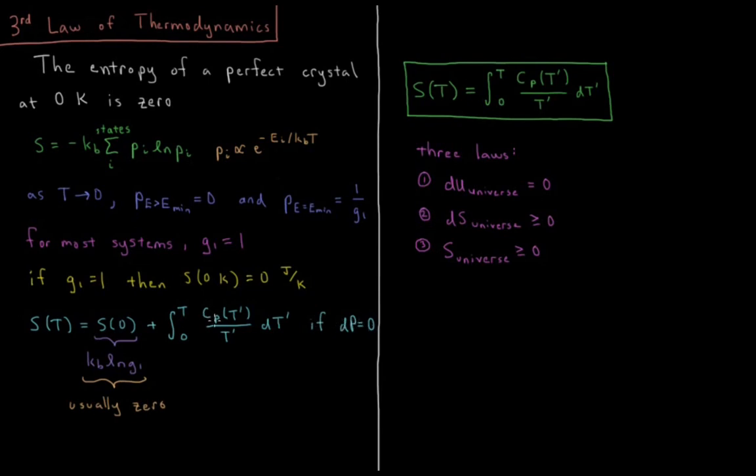If it's a constant volume process, then we use the constant volume heat capacity instead.